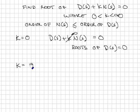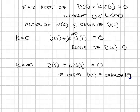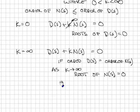If k equals infinity, then we have D(s) plus k N(s) equals 0, and I'll have two cases. One is if the order of D(s) equals order of N(s), then you should be able to convince yourself that as k goes to infinity, the roots of the polynomial are the roots of N(s) equals 0. Can you see that? We have two polynomials here. The second polynomial is multiplied by a really big number, and so it becomes most important. The second possibility is if the order of D(s) is greater than the order of N(s).